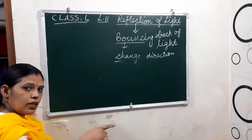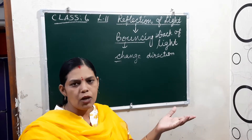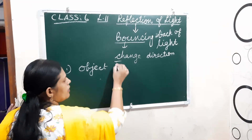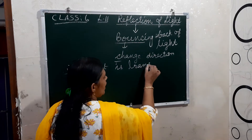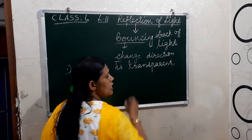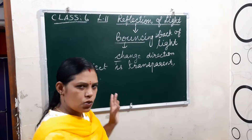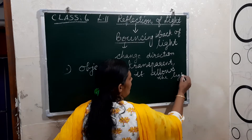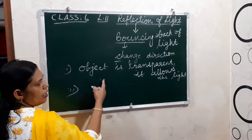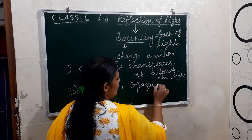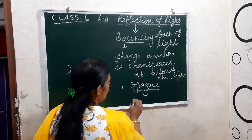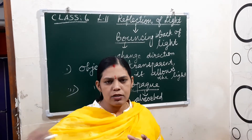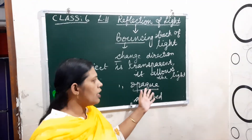When light falls on a surface, different things happen depending on the object. If the object is transparent, it allows the light to pass through. If the object is opaque, the light may be absorbed, or some of it will bounce back and get reflected. That is how reflection occurs.